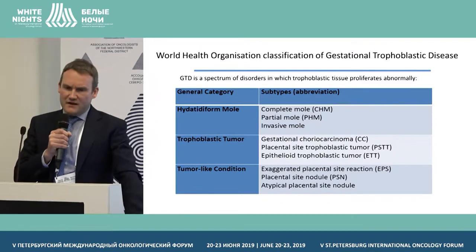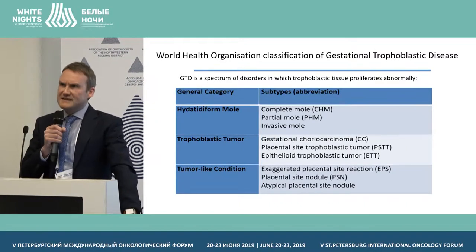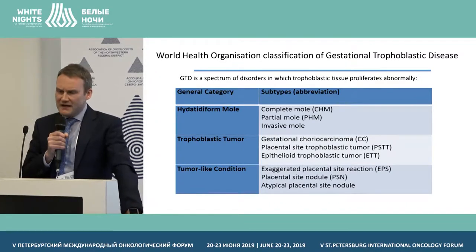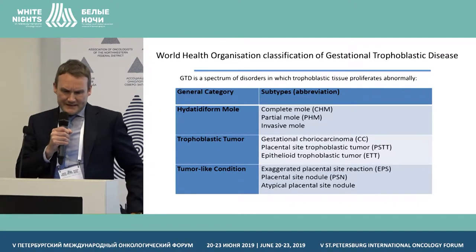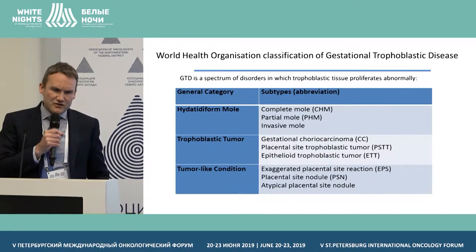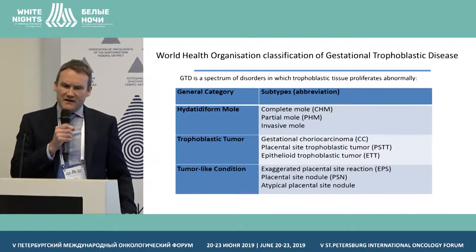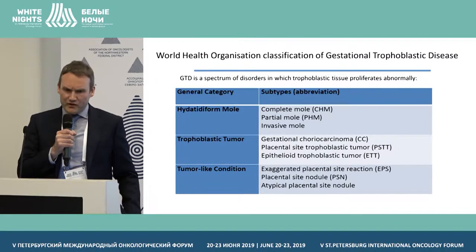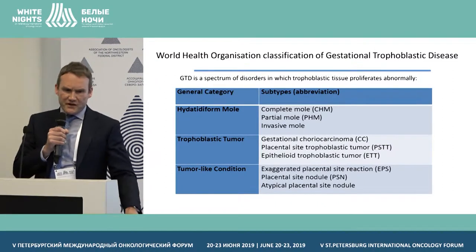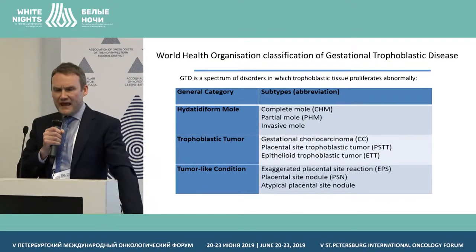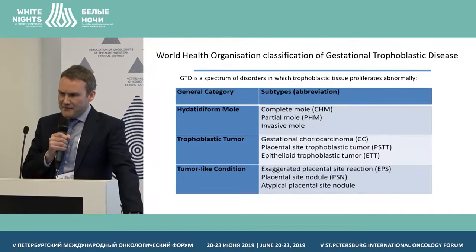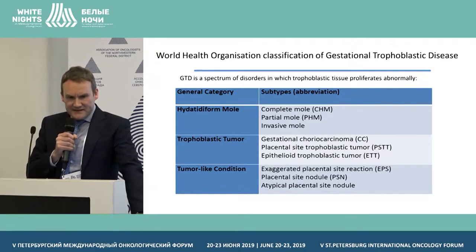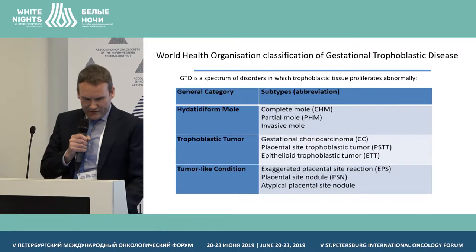Overall cure rates for gestational trophoblastic disease should approximate 98%, whereas 60 years ago women would have sadly died from the malignant forms of this disease. This is largely due to improvements in treatment and follow-up protocols, centralization of care, the development of effective chemotherapy regimens, and the use of HCG as a biomarker.